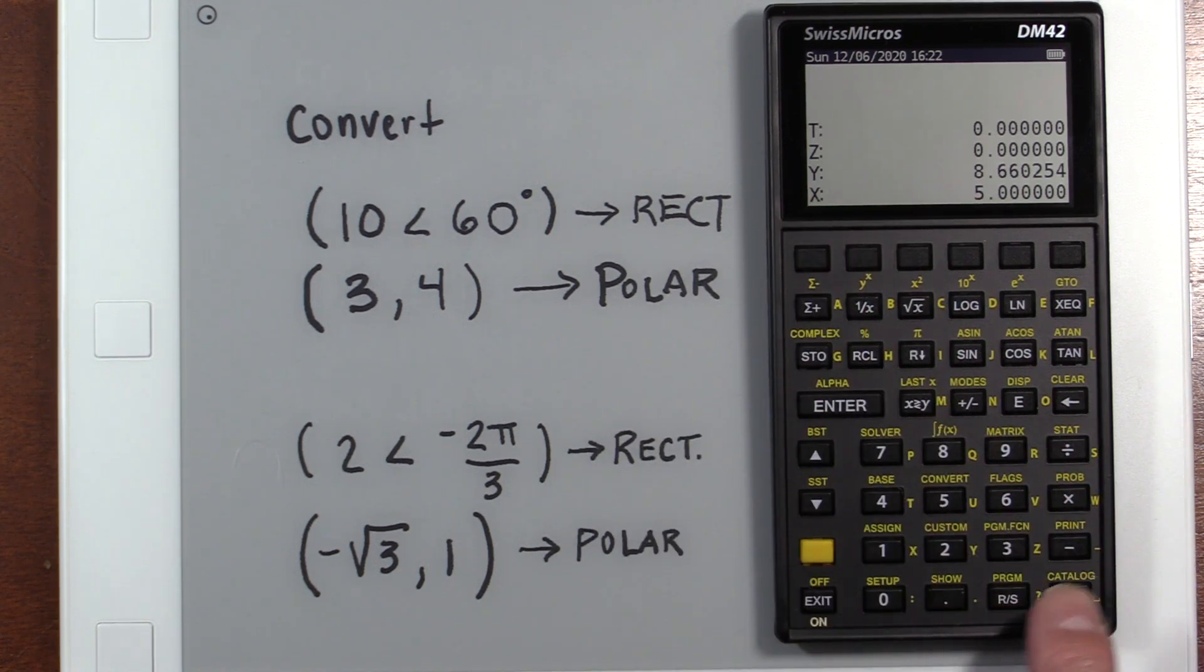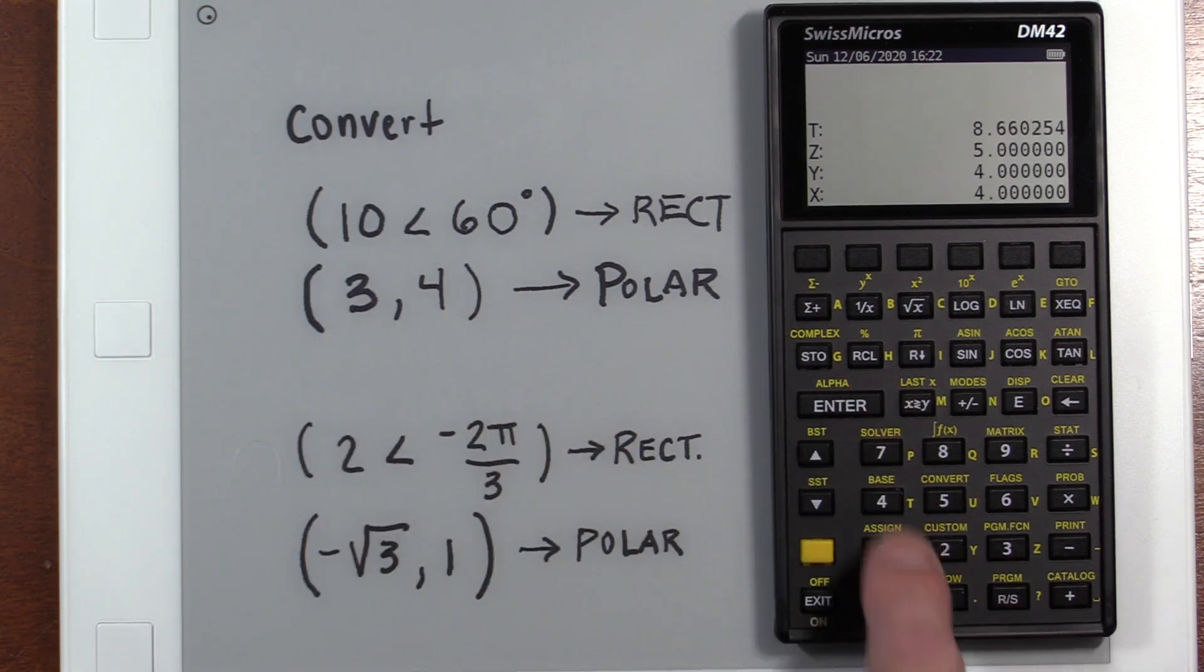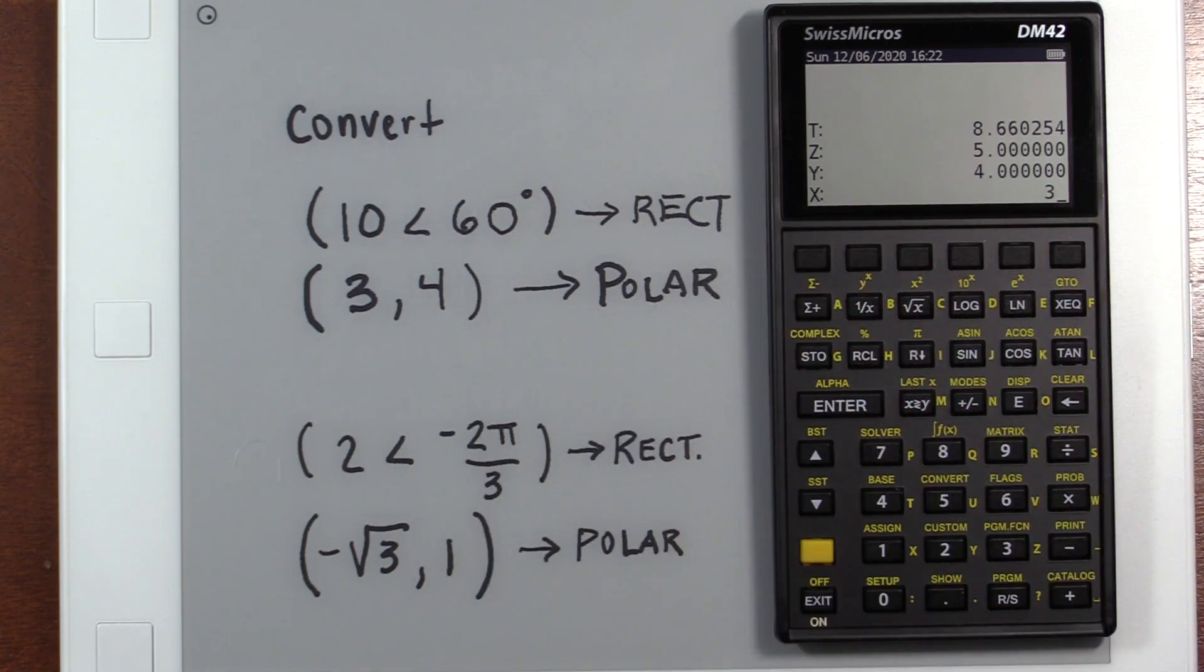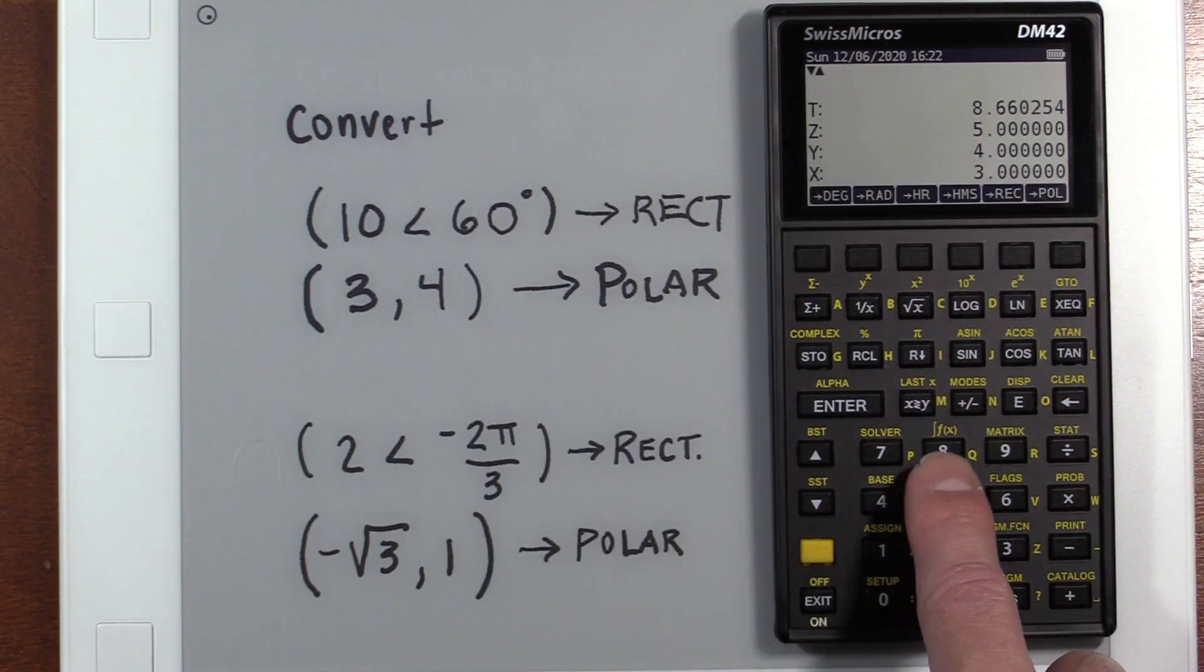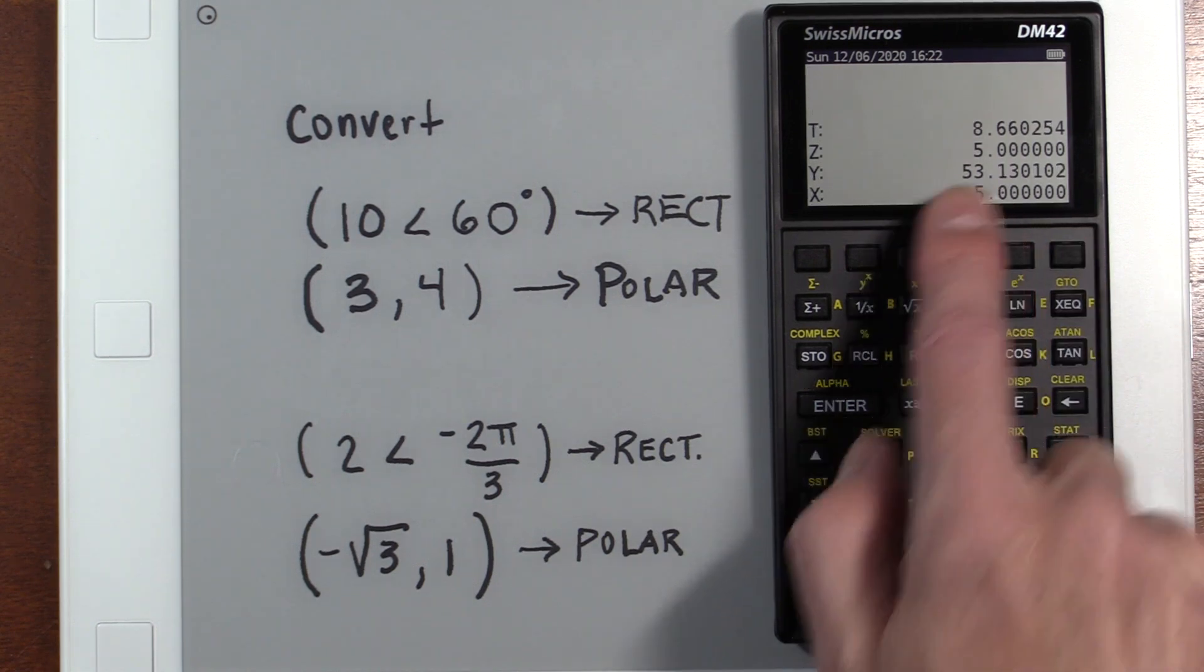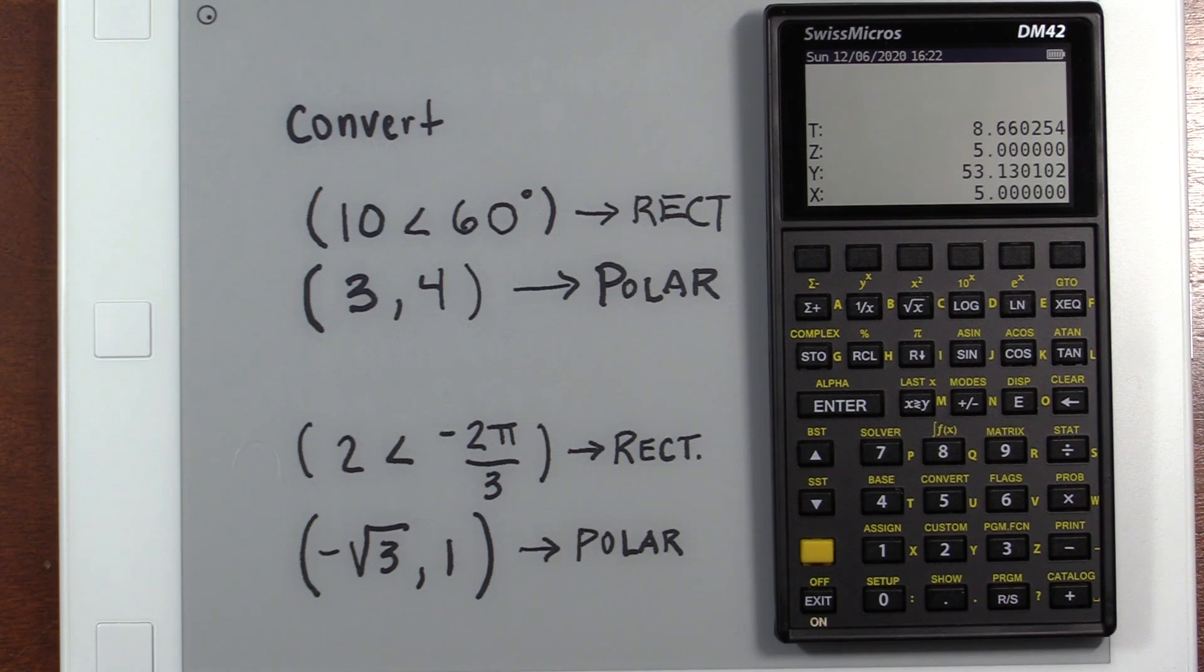And let's do the other way around. If we're doing polar, we've got to put this y-coordinate in first, and the reason for that is that way the 3 goes with the x and the 4 goes with the y with regards to the stack. Let's convert it to polar. So that is the same as a magnitude of 5 at an angle of 53.13 degrees.